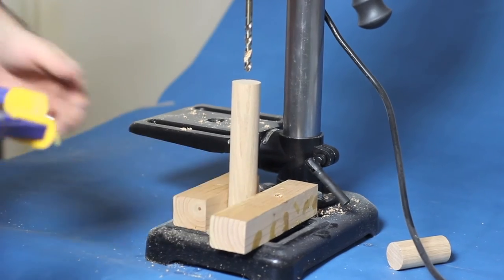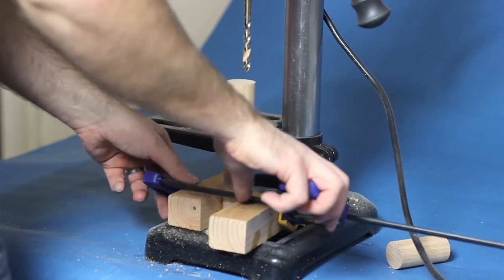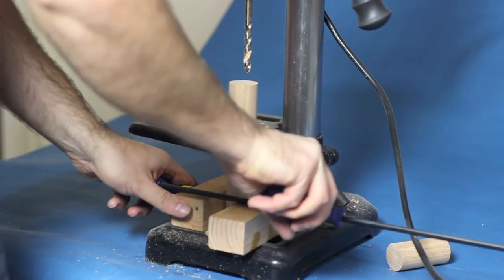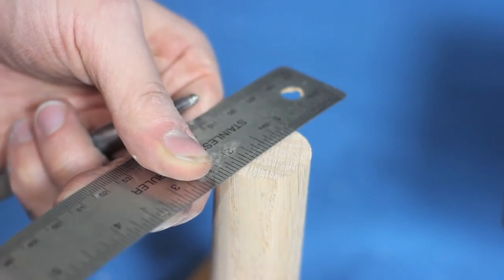To hold the dowel rod vertical, clamp it between two scrap boards. We use two two-by-twos. Then mark the center of the end of the dowel and use the centering punch to create a divot to line up the drill bit.